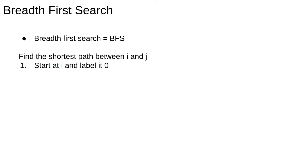Breadth-first search is a very common algorithm for exploring a network. It's so common it's often shortened to the acronym BFS. To find the shortest path between i and j, we start at i and label that node 0. We then go to its neighbors, that is the nodes directly connected to the starting node, and give them the label 1, then add them to a queue.